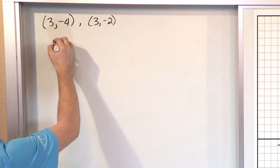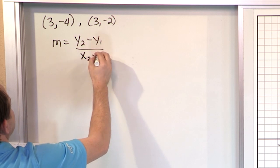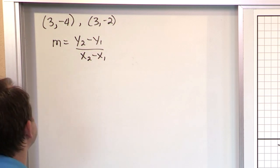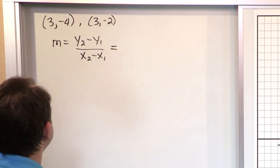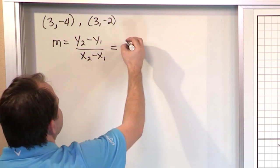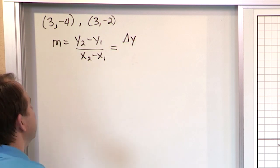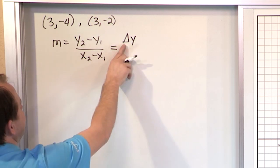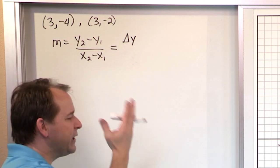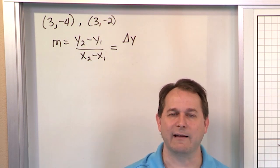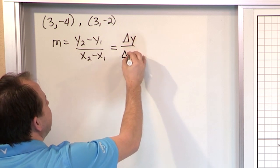Normally we say y2 minus y1 over x2 minus x1 — that's what's in your book and what I've been doing. But as you get higher in math, we shorten things. When you have y2 minus y1, you'll often see it written as this triangle shape. We call it delta y — it's the Greek letter delta, and it just means 'change.' So replace delta with the word 'change,' and it reads as 'change in y.'